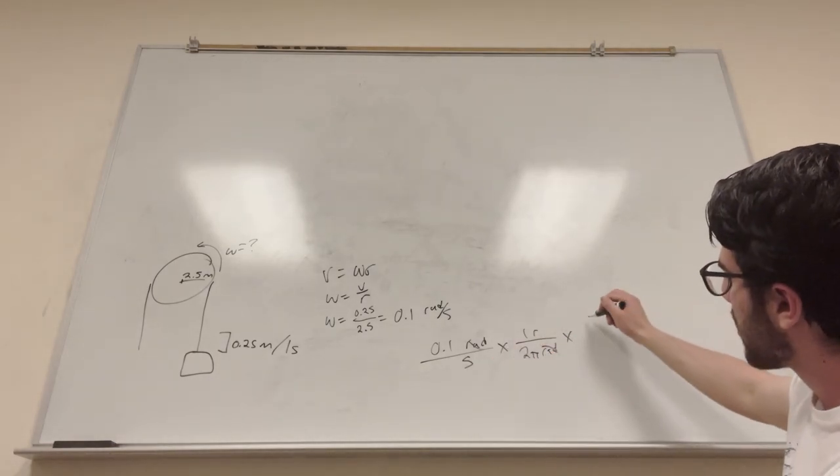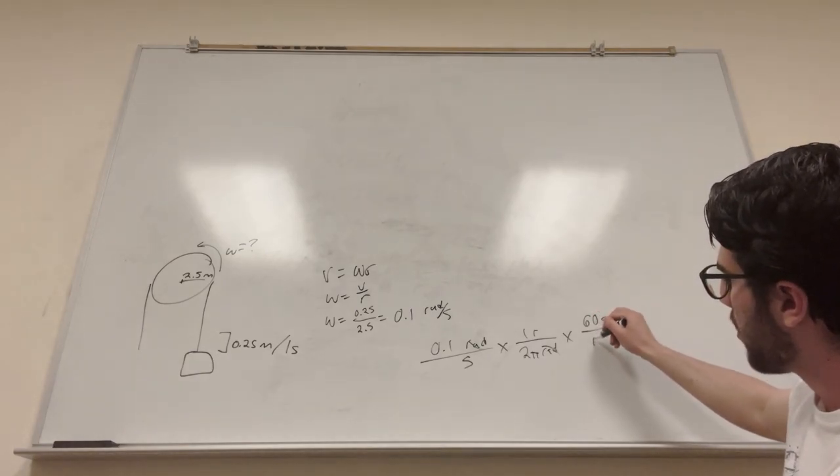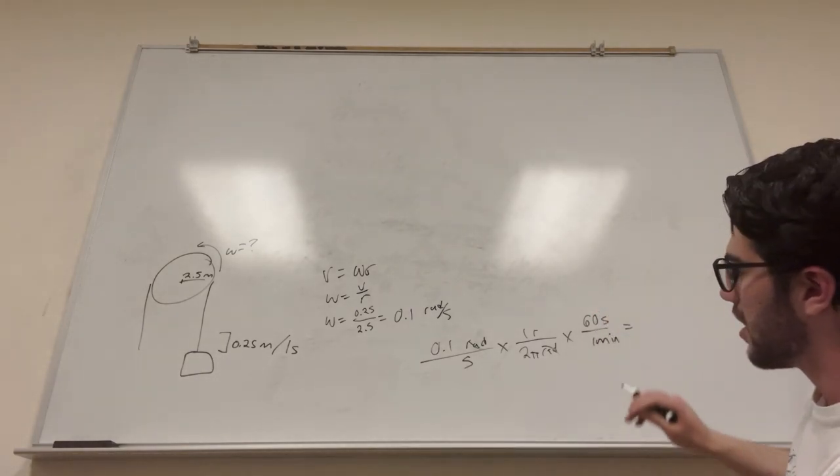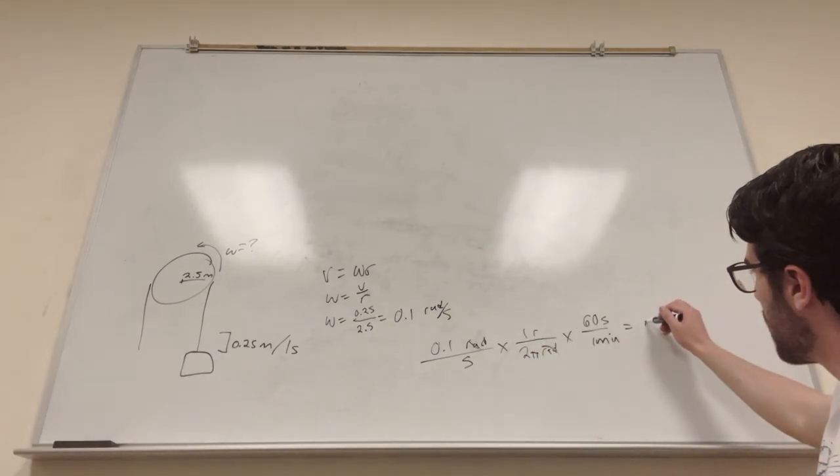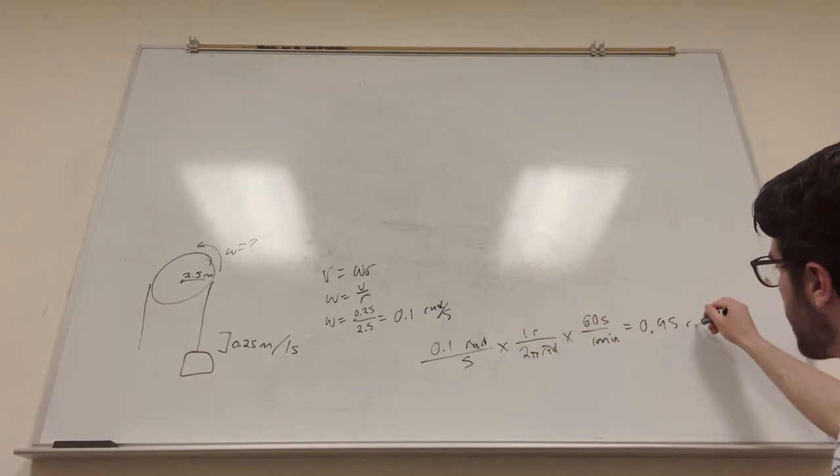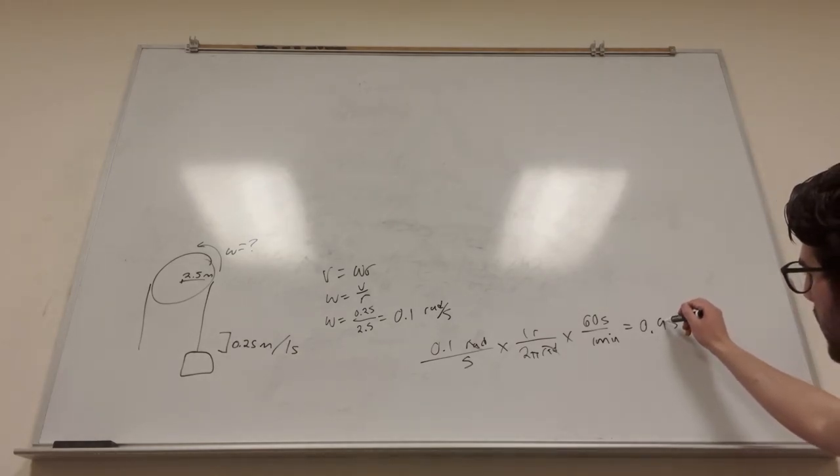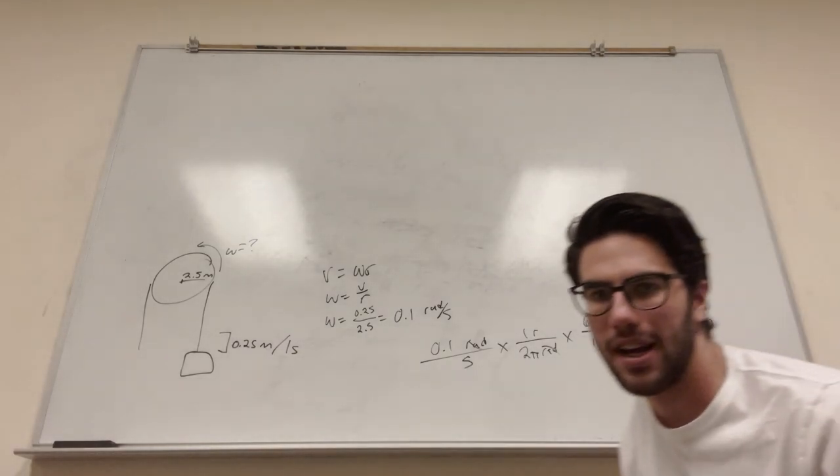Okay, so to get rid of the seconds, you know that there's 60 seconds per one minute. And so therefore, that number is going to switch to 0.95 radians per minute. There you go. That's your answer for part A.